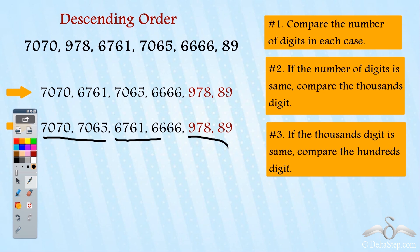We go to rule number three. If the thousands digit is same, compare the hundreds digit. In this case my thousands digit is same but my hundreds digit is also the same. So rule three does not apply here.